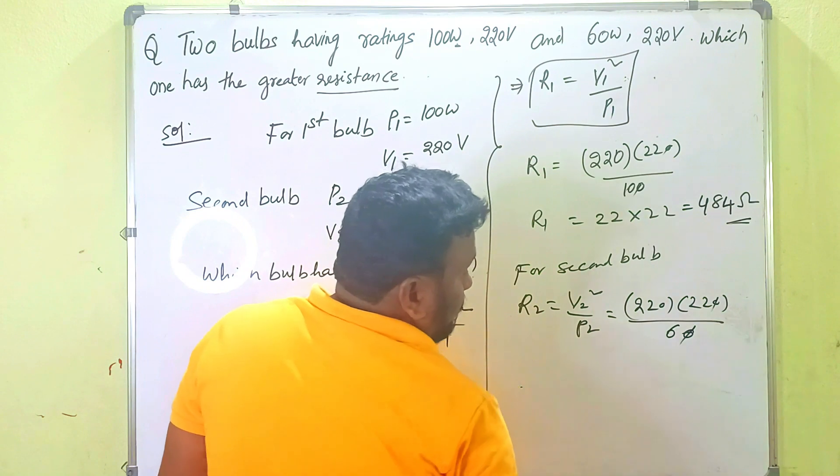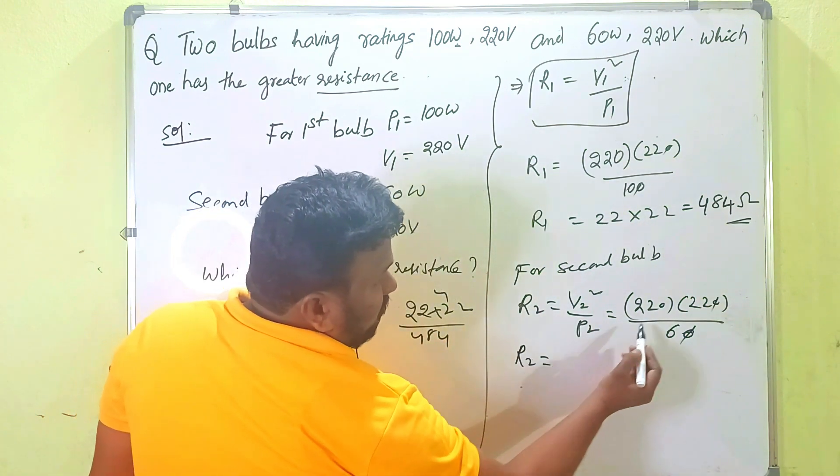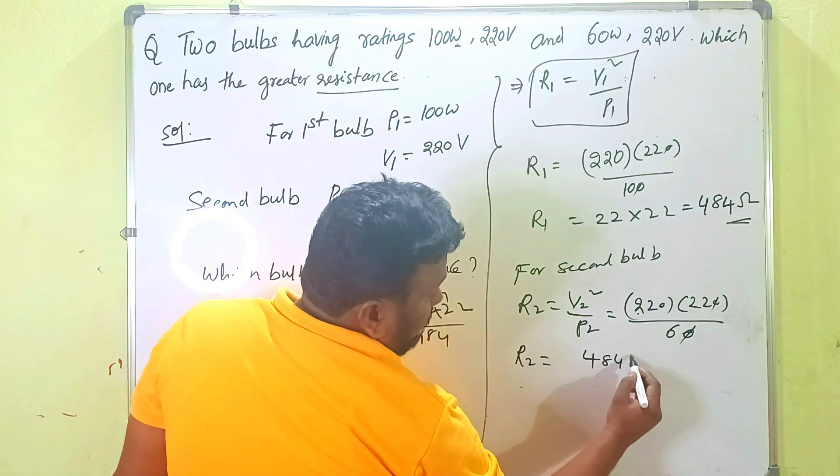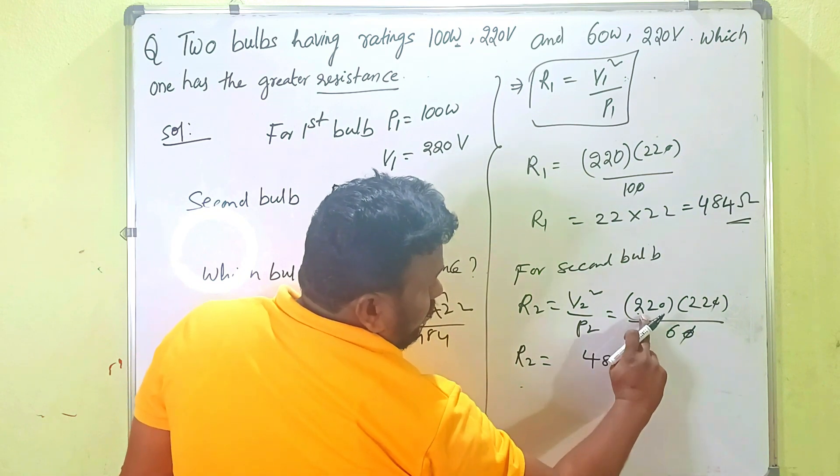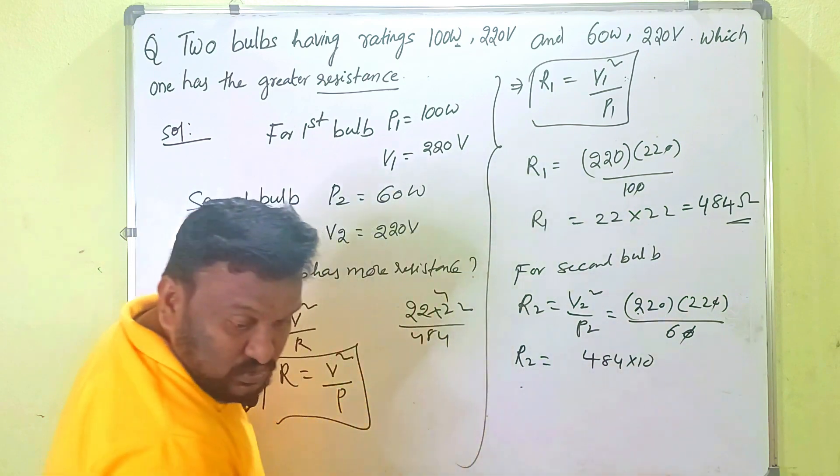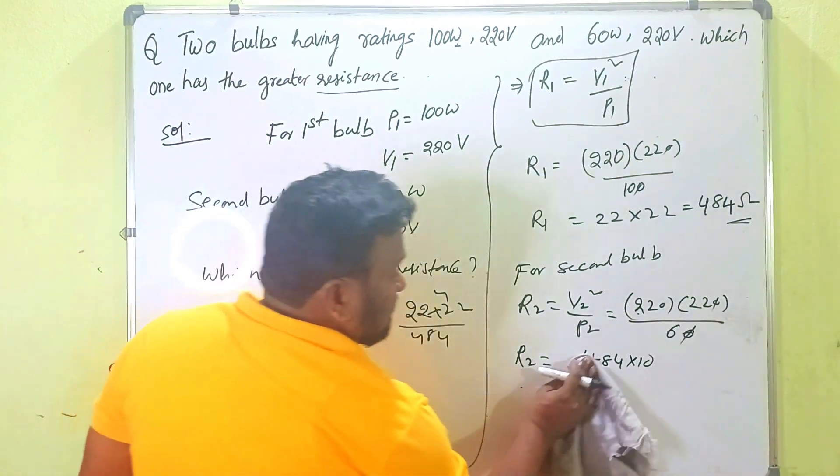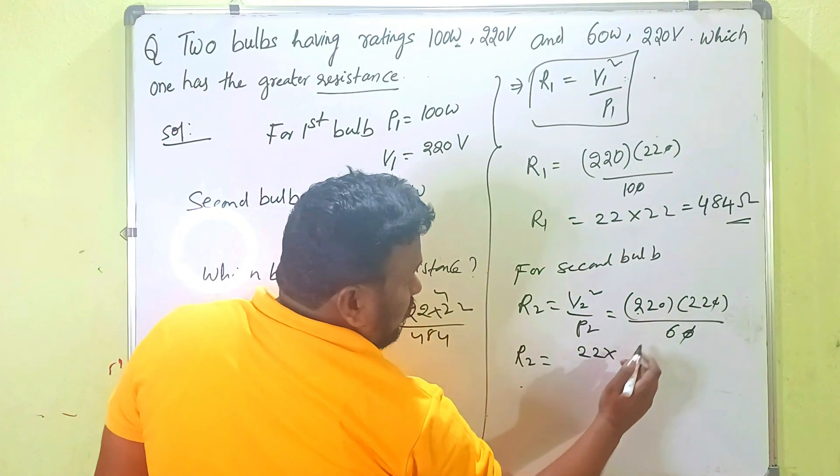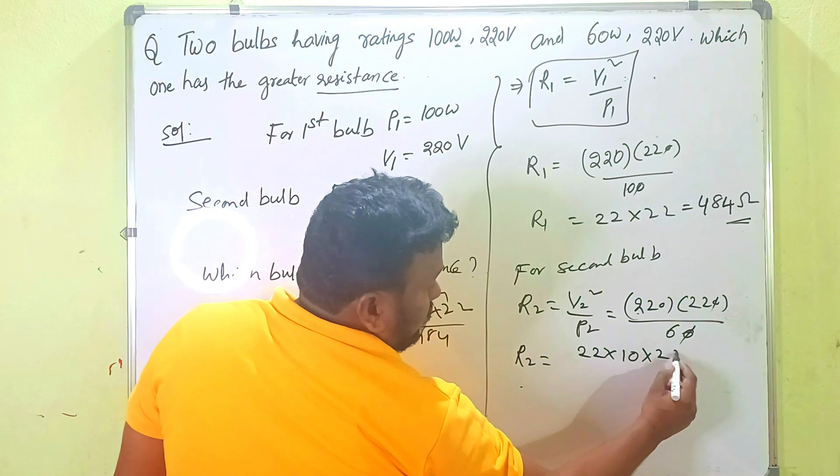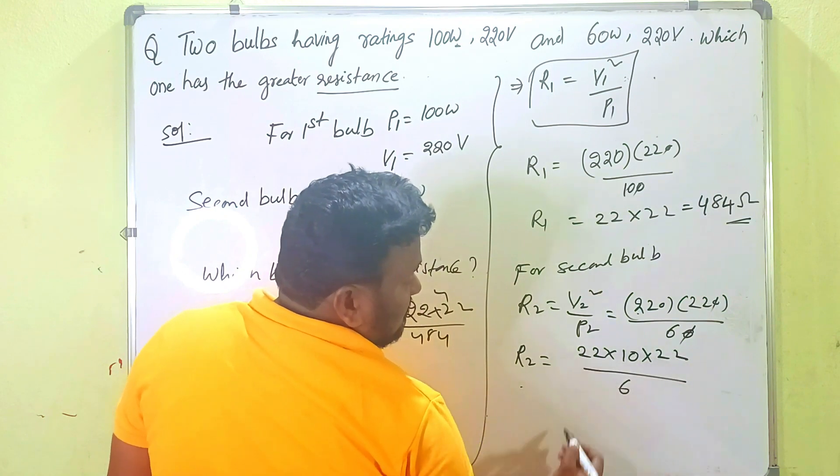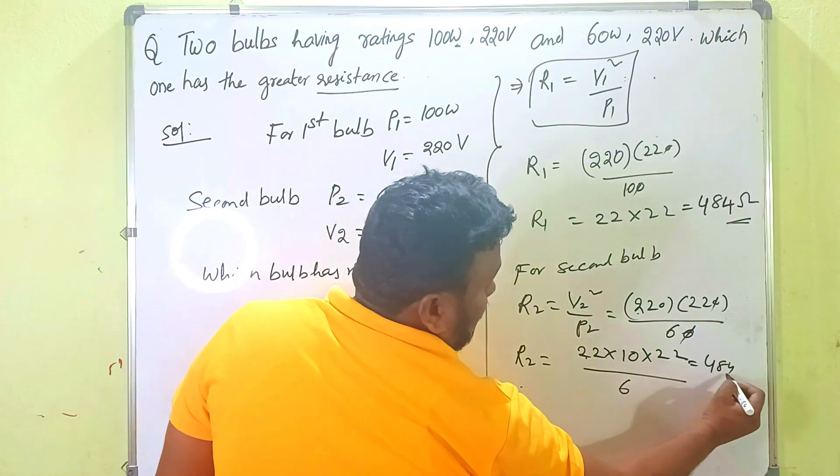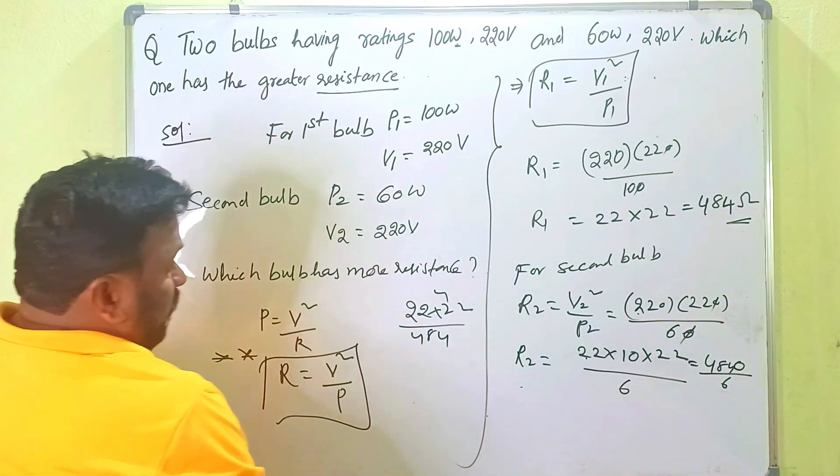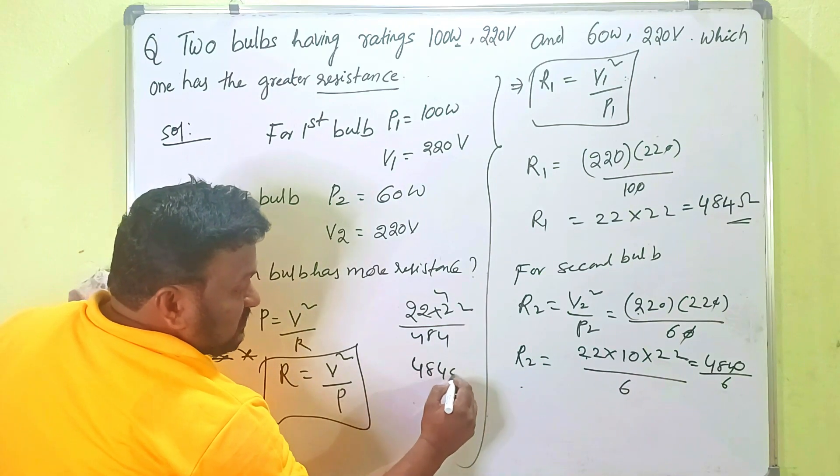Then what yet? R2 is equal to what? 22 into 22 is 484. 484 into 10 here. 22 into, I am going to write like this to simply understand that one. I am going to write like this: 22 into 12 is what? 12 into 10 into 22 by 6. 22 is what? 4 into 10, 4840 by 6.